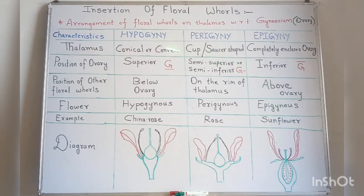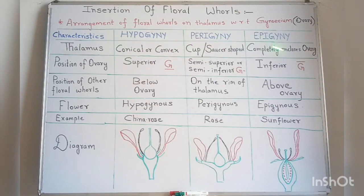So these are the three types: hypogyny, perigyny, and epigyny. This tabular form shows at a glance the position of the ovary and the position of the other floral whorls for all three types.